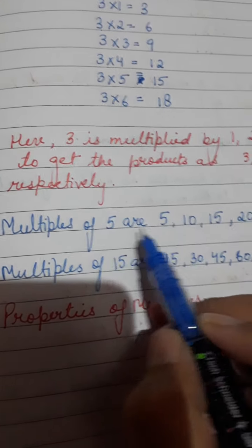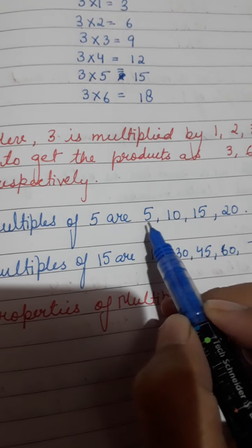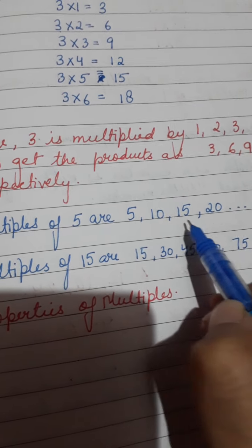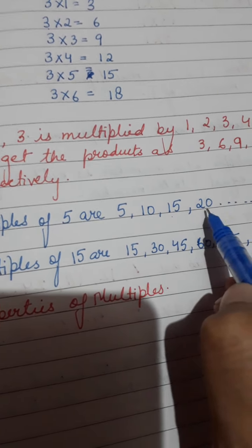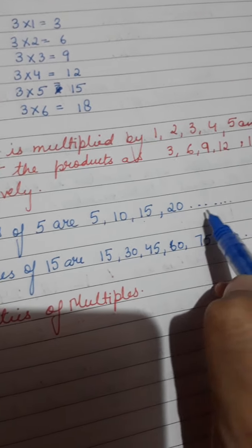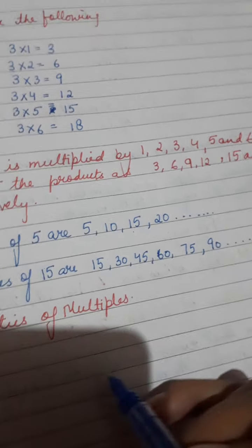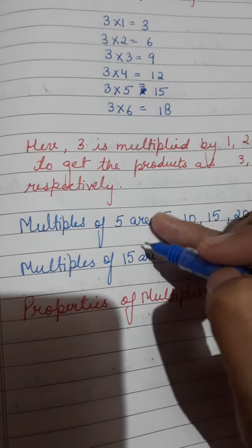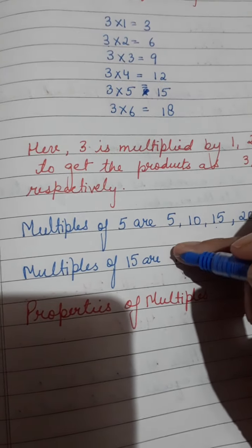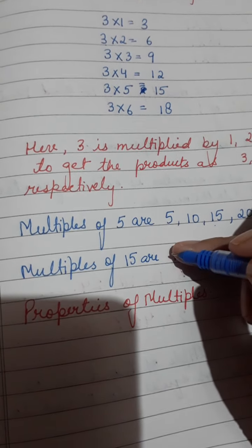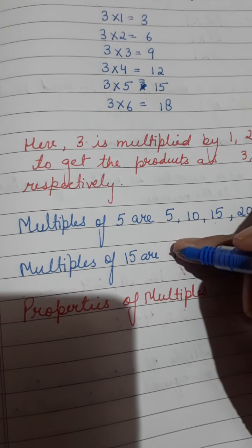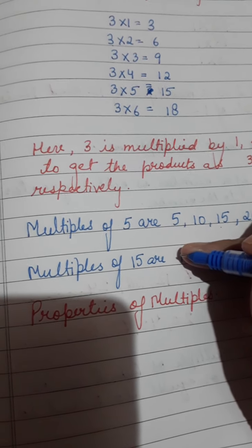So if I say find out the multiples of 5, what will you do? You will simply write the table of 5: 5×1=5, 5×2=10, 5×3=15, 5×4=20, and so on.